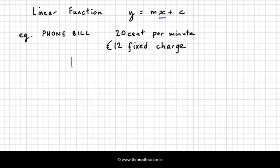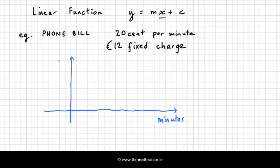So if you didn't use any minutes at all on your phone bill you'd still be charged 12 euros. We're going to show how this function is a relationship between the two quantities — the two quantities being the minutes used and the cost of the bill in euros. Clearly the amount of the bill depends upon the number of minutes, so the bill depends on the minutes.